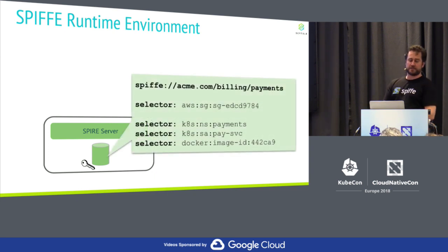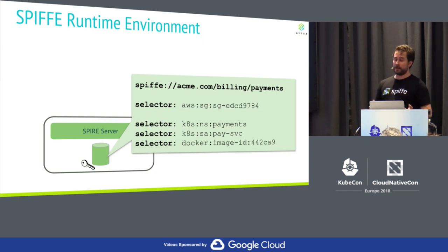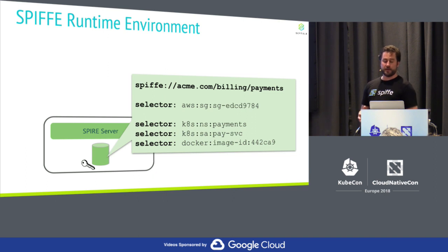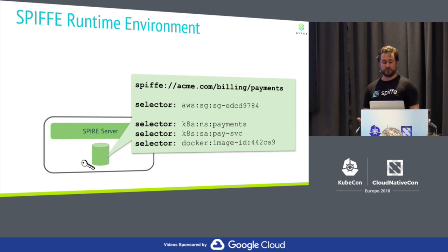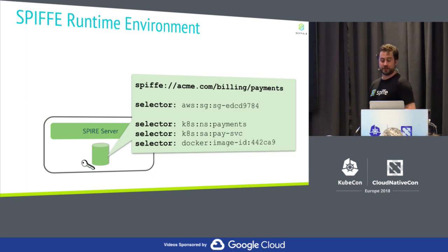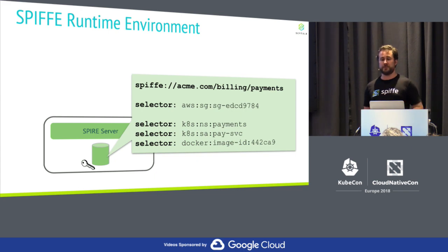SPIRE is extremely modular. It supports a number of different attestation mechanisms via a plug-in model, and through that, a number of different selectors. Selectors may be in terms of infrastructure concepts or Kubernetes concepts. You might also say the workload must correspond to a particular Docker image, or have been started from a particular Docker image with a particular content hash.